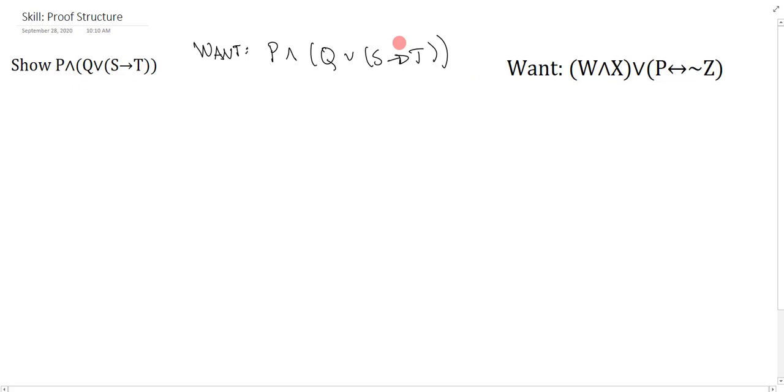But then I essentially do a parsing exercise which we learned back in unit two and I'm going to identify the main connectives and break it down. So if this is my main connective, if I want to show and if I really want a conjunction introduction, well I know that the conjunction introduction rule is to adjoin two things together so I really need them. If I want this and I really need P on its own and I need Q or S arrow T on its own.